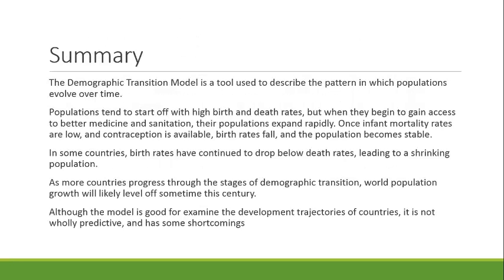In summary, the demographic transition model is a tool used to describe the pattern in which populations evolve over time. Populations tend to start off with high birth and death rates, but when they gain access to better medicine and sanitation, their populations expand rapidly. Once infant mortality rates are low and contraception is available, birth rates fall and the population becomes stable. In some countries, birth rates continue to drop below death rates, leading to a shrinking population. As more countries progress through the stages, world population growth will likely level off sometime this century. Although the model is good for examining development trajectories, it is not wholly predictive and has some shortcomings.